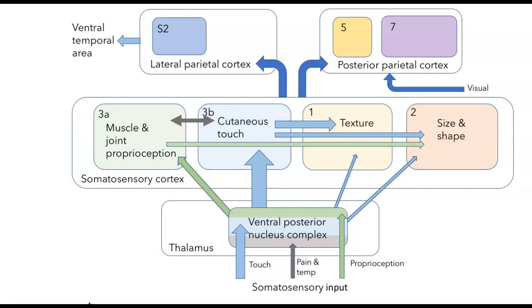Many of the cells in the posterior parietal cortex respond most strongly, have the highest frequency of action potentials, when an animal is asked to reach out and grasp something. So it seems to be involved in planning and guiding movements. Not surprisingly then, we've got output to the frontal motor areas, where the neurons that will drive those movements are located.